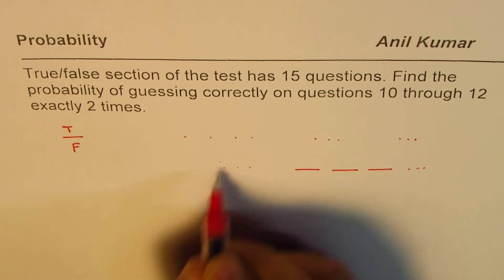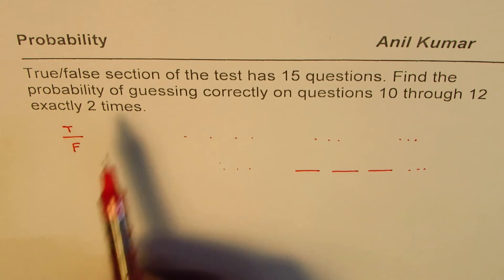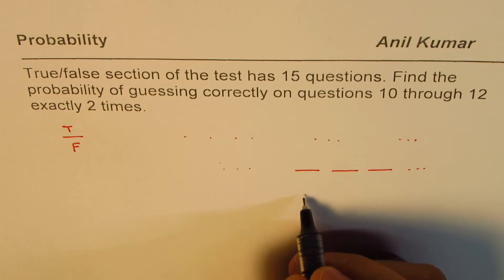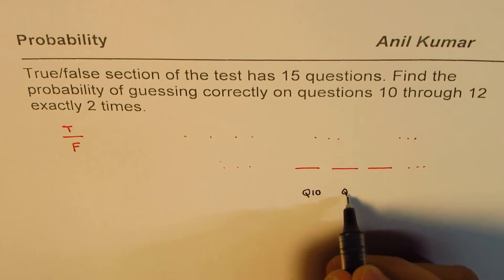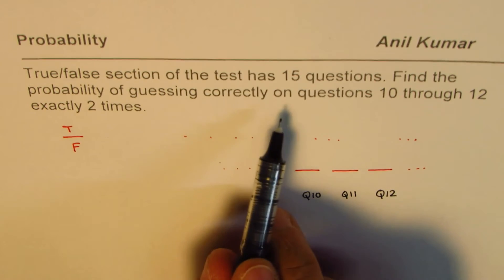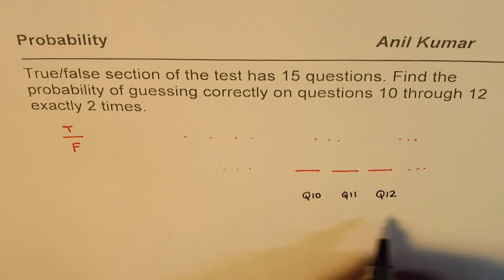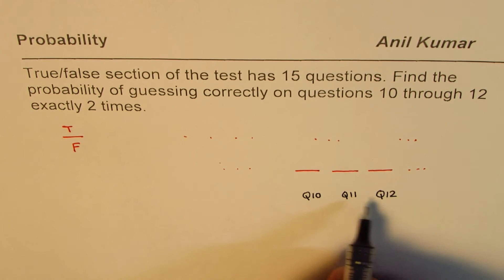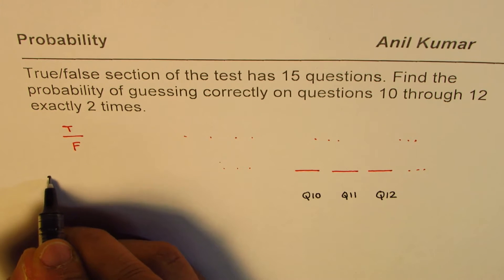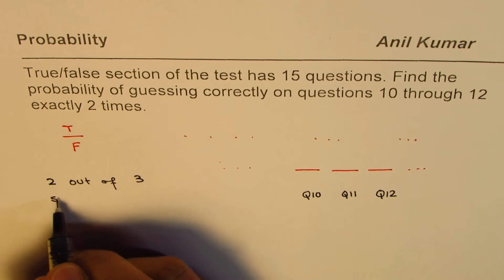Now, 'exactly two times' means that out of questions 10, 11, and 12, we need exactly two correct answers. So out of these three questions — each having two choices — two out of three should be correct.